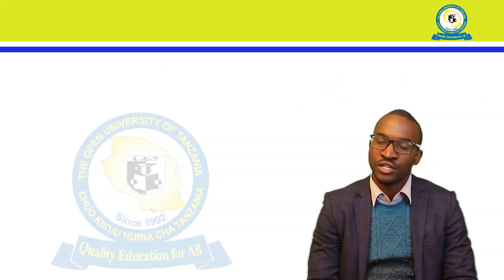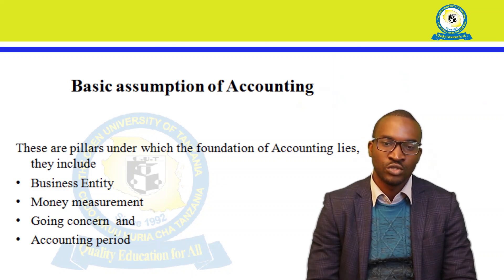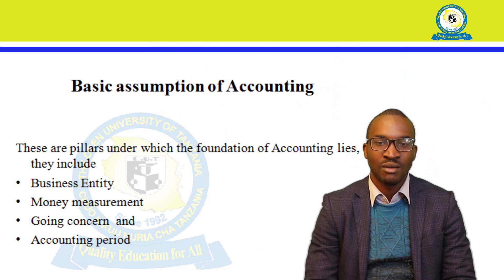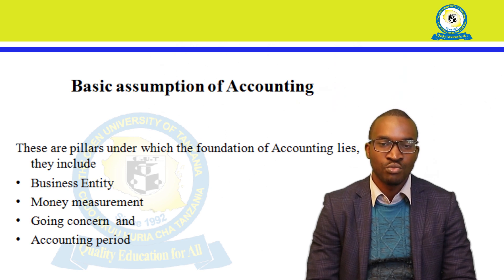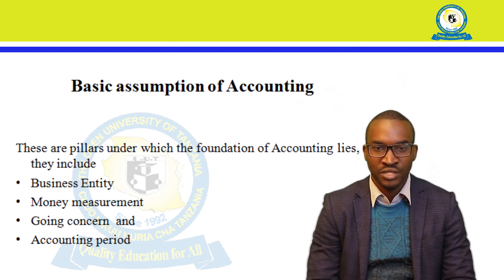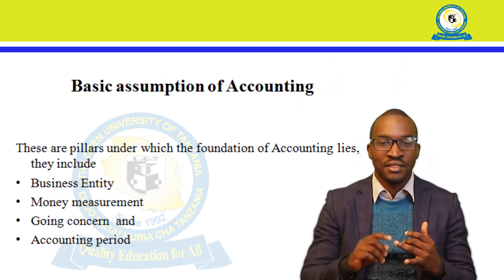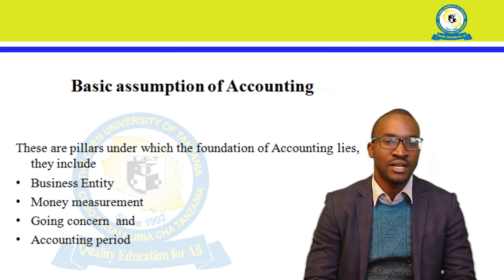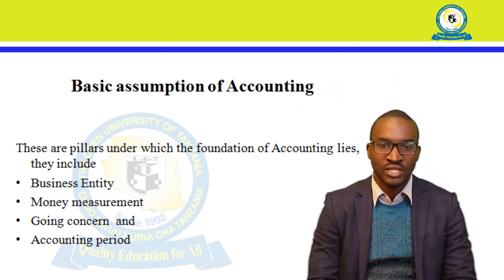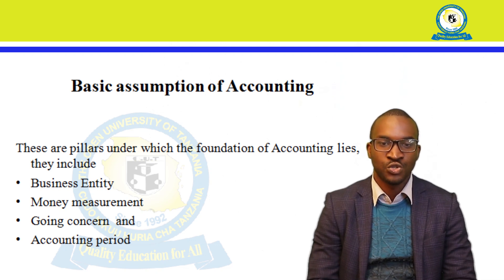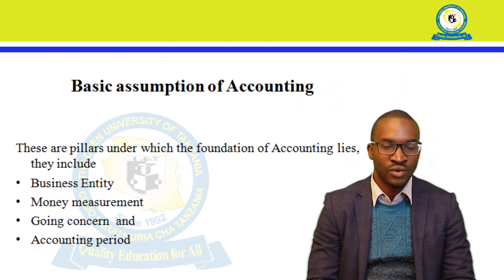In this knowledge area, as an introductory part, we need to understand some of the assumptions needed when recording accounting information. These are the pillars under which the foundation of accounting lies, including: the business entity, money measurement, going concern, and the accounting period. The business entity assumption states that a business is separate from its owners — the activities of a business should be separated from the activities of the owner.